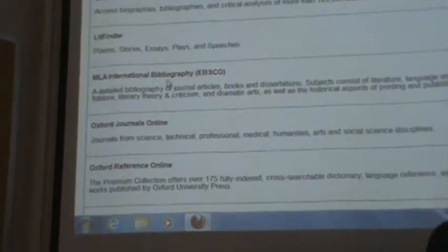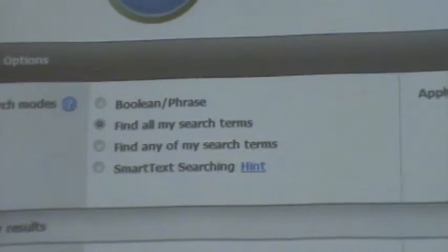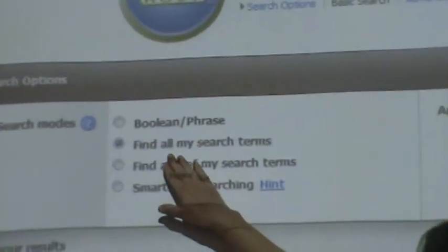We're going to go to MLA International Bibliography EBSCO. That's the easiest one to go through and it's got the best stuff. Now we turn off Boolean phrase by clicking on find all my search terms.